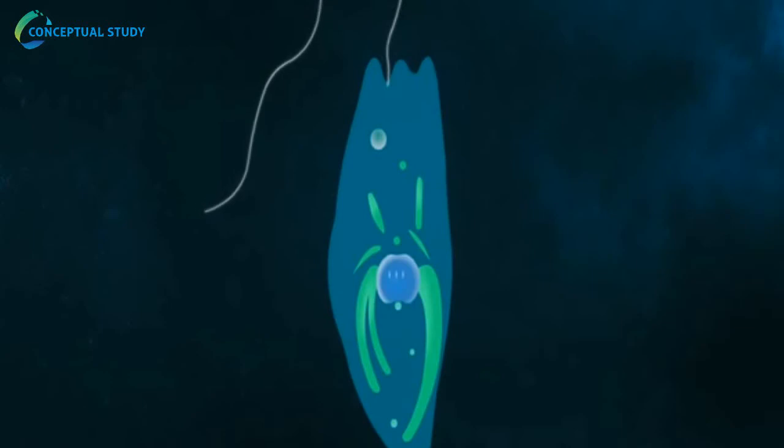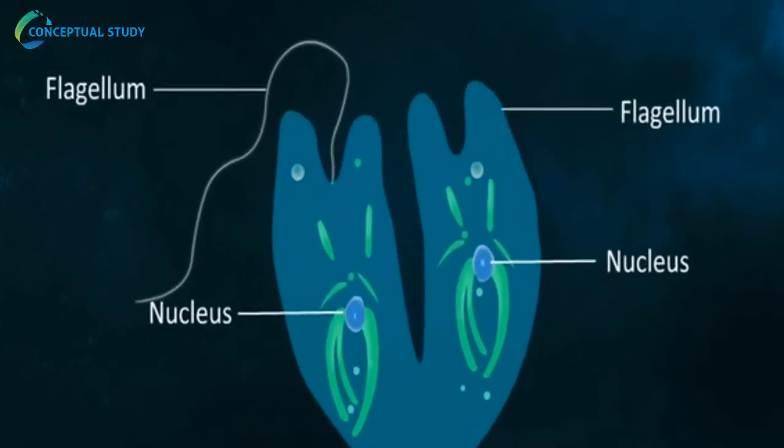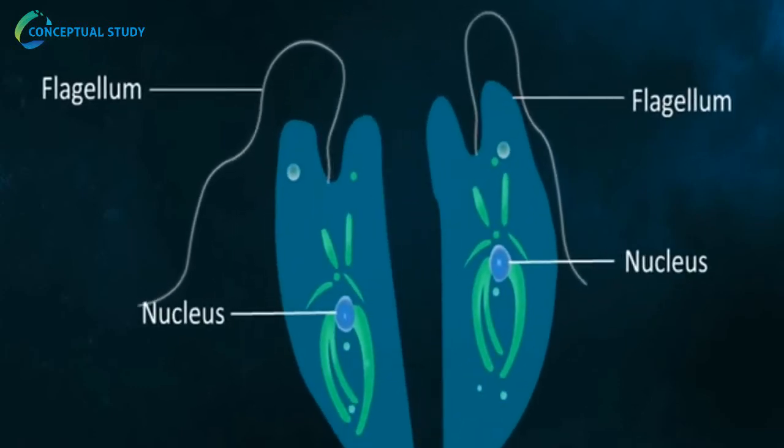Longitudinal binary fission in Euglena: In longitudinal binary fission, the body of Euglena divides longitudinally. Cytokinesis takes place along longitudinal axis.